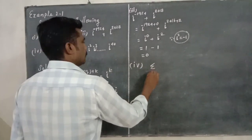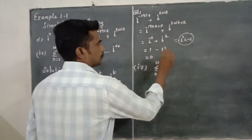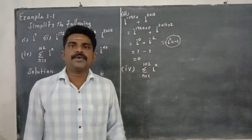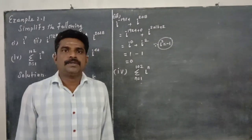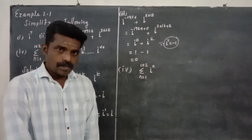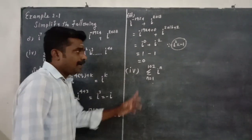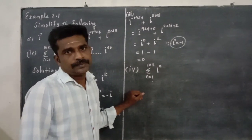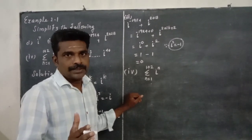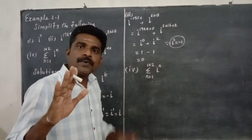Fourth: summation where n equals 1 to 102 of i power n. That means i power 1 plus i power 2 plus i power 3, and so on up to i power 102. The key property is: the sum of four consecutive powers of the imaginary unit is zero — i power 1 plus i power 2 plus i power 3 plus i power 4 equals zero.